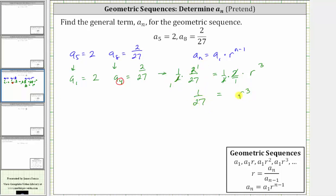And now to solve for r, we need to undo the cubing by taking the cube root of both sides or raising both sides to the 1/3 power. Let's take the cube root of both sides. The cube root of r cubed is r, and the cube root of 1/27 is 1/3.